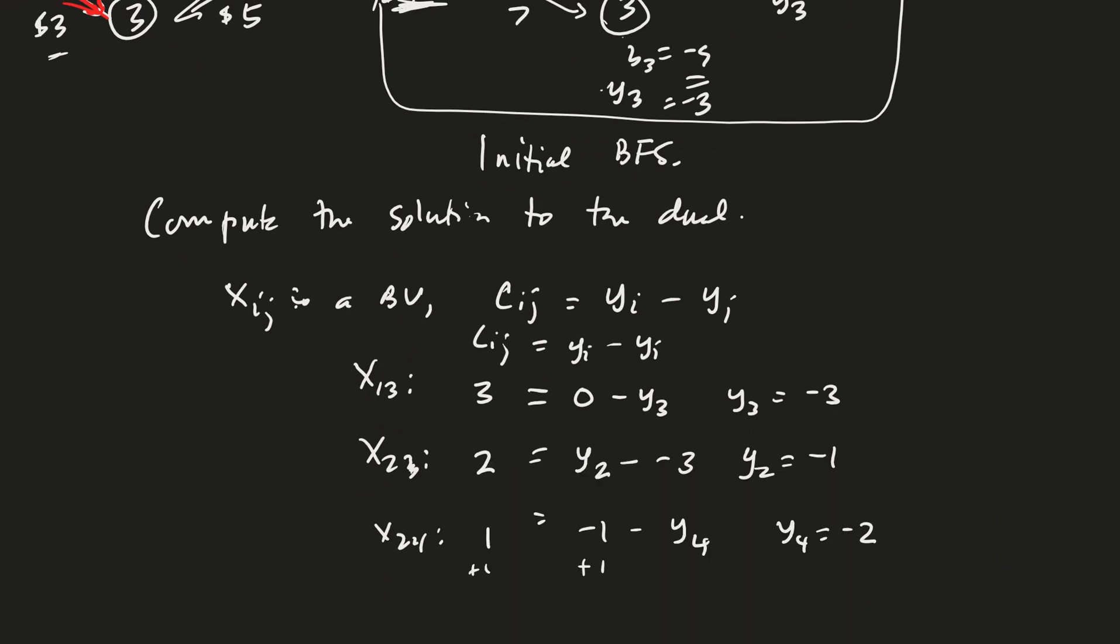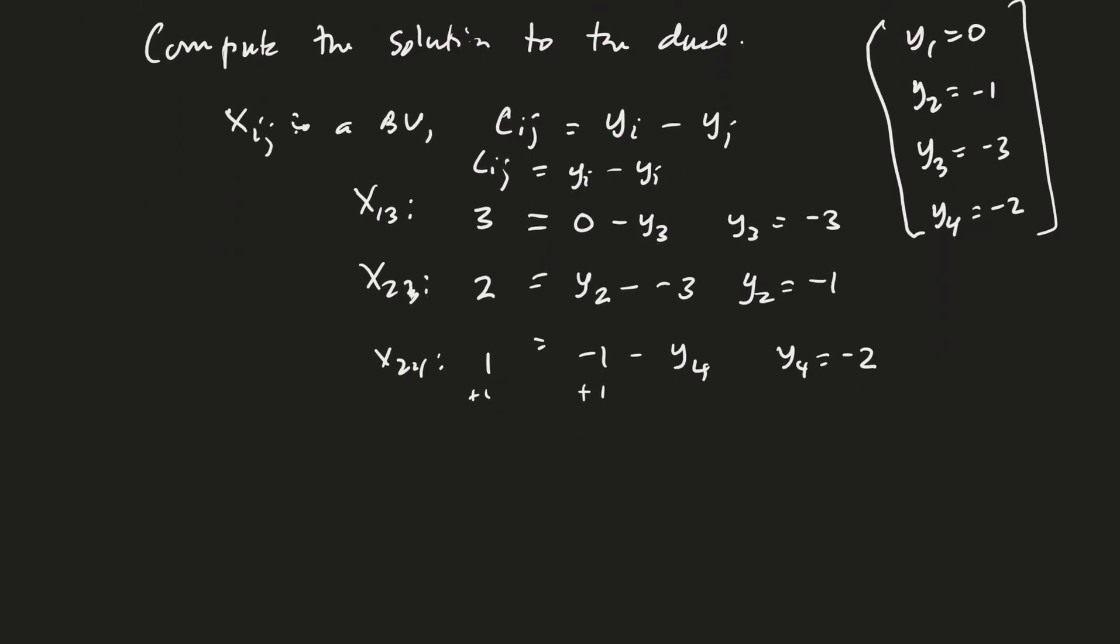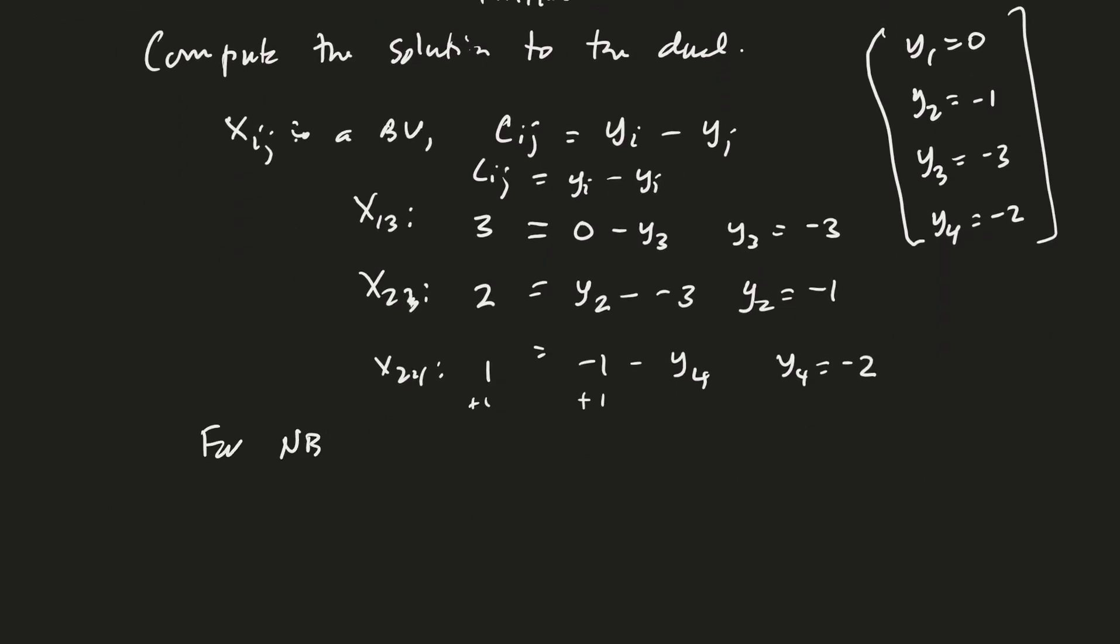So that gives us all of our Y values. Again, Y1 is equal to 0, Y2 is equal to negative 1, Y3 is equal to negative 3, and Y4 is equal to minus 2. Good. Now why do we need those? That's because we said that for non-basic variables, right, the value of row 0 is Cij minus Yi plus Yj. These are not values of the flow, by the way, right? These are values of the row 0.